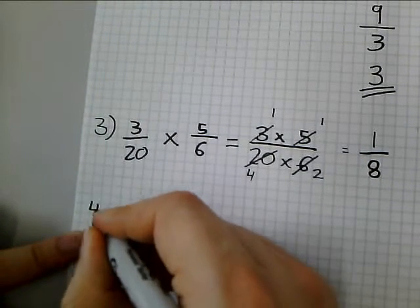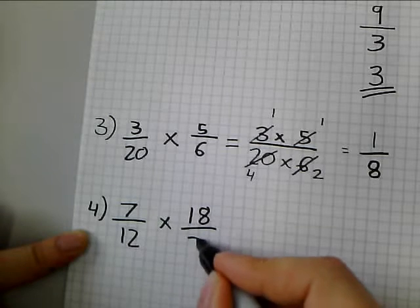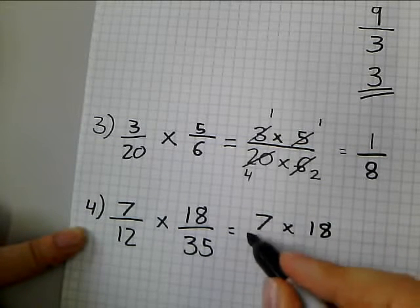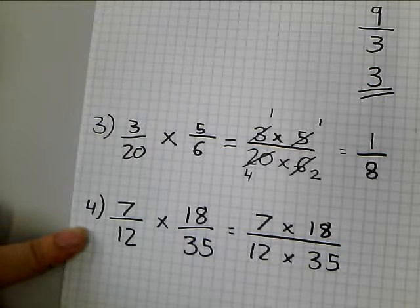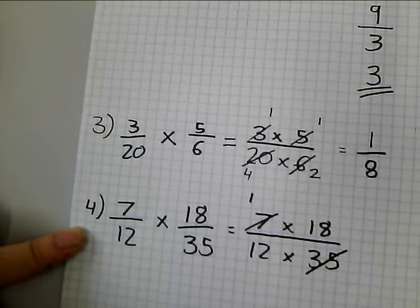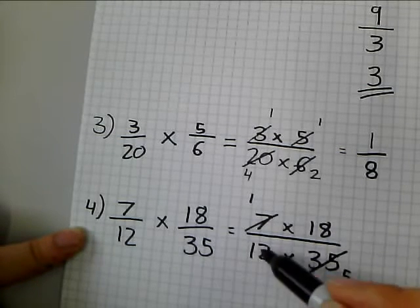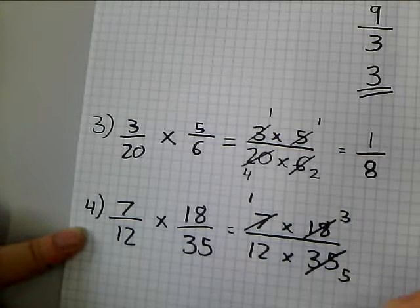Let's try that again with question 4. So I have 7 over 12 multiplied by 18 over 35. Same thing again. I'm going to show that I want to multiply the tops, the numerator, and multiply the denominators. Now, before I multiply these sums, I'm going to look for common factors. Now, let's have a look. So I know that 7 and 35 share factors. 7 goes into both. So I'm going to divide this by 7. 7 divided by 7 is 1. I'm going to divide 35 by 7. 35 divided by 7 is 5.